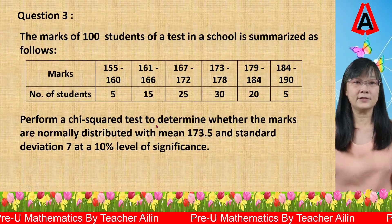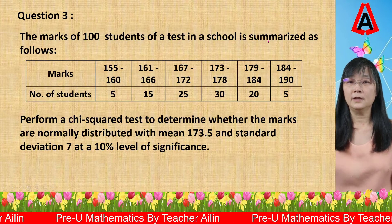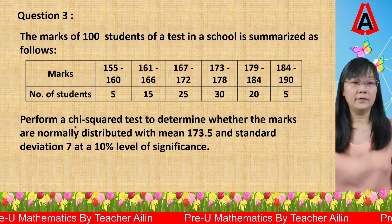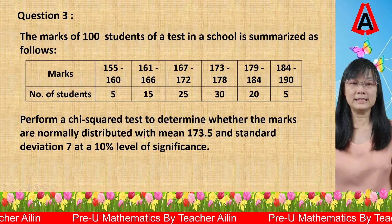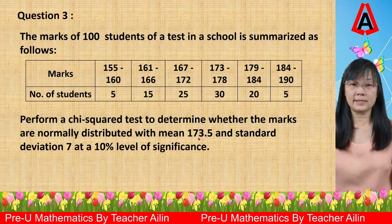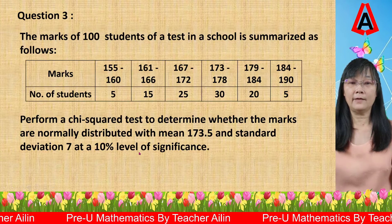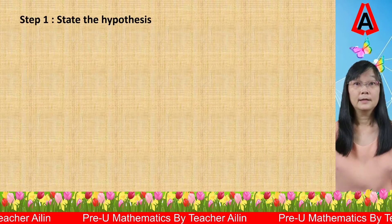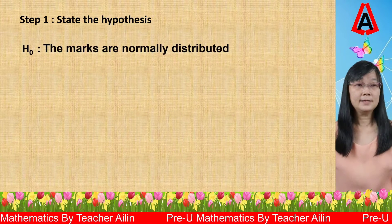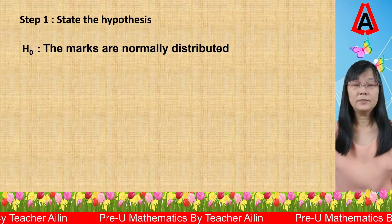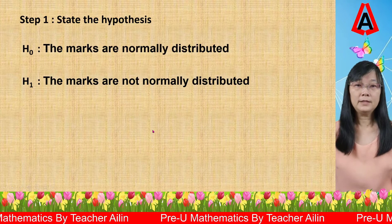Now let's proceed to the question. The marks of 100 students of a test in a school is summarized as follows. Perform a chi-squared test to determine whether the marks are normally distributed with mean 173.5 and standard deviation 7 at a 10% level of significance. First step: state the hypothesis. The null hypothesis is that the marks are normally distributed. The alternative hypothesis is that the marks are not normally distributed.